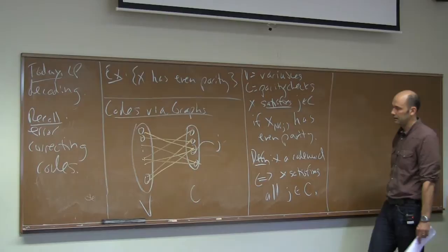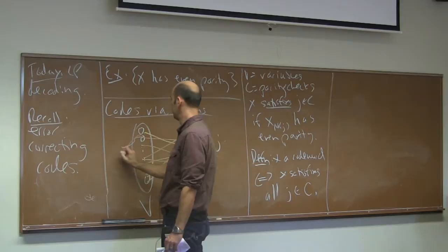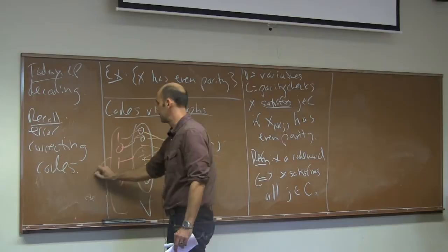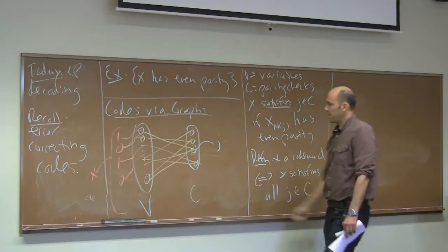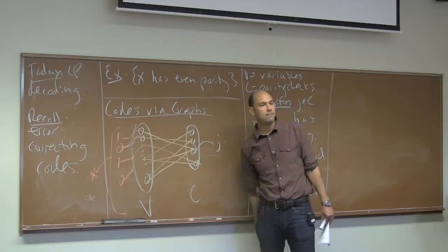This is basically establishing evenness of parity of various subsets of the left-hand side. For the earlier even-parity example, the corresponding bipartite graph would have a single constraint node on the right connected to everything on the left — one node on the right forming a star to the left-hand side.